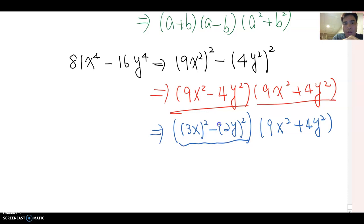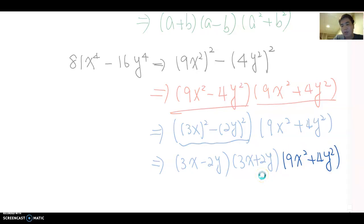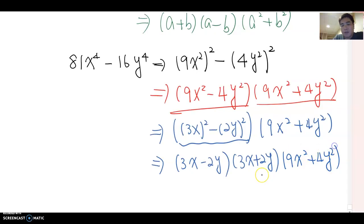Therefore this answer becomes 3x minus 2y, and 3x plus 2y, and 9x squared plus 4y squared. There is the final factoring answer for this binomial problem.